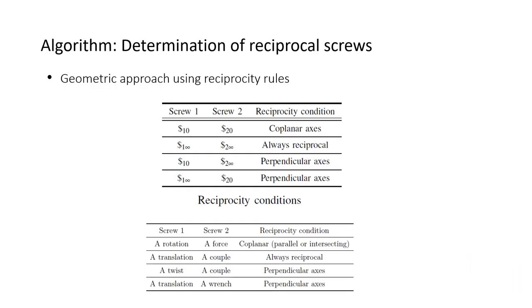Two screws are said to be reciprocal to each other if their reciprocal product equals zero. That is, when any wrench acting on a screw in one system exerts no power on any twist on a screw in the other system. Hence, if a screw system of twists represents the degrees of freedom of a rigid body, the reciprocal system of wrenches is the constrained forces acting on it. The duality holds true.